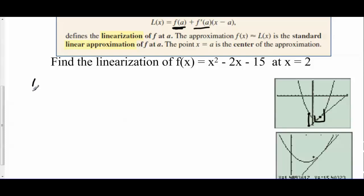Well, this is the equation of a line so we need a point. The x is 2 and we need the y. So if we take 2 squared is 4 minus 4 is 0, and then we have minus 15. So we have the point (2, -15). Now we need the slope and the derivative is 2x - 2, and we're going to evaluate that at x equals 2, which is 4 - 2, which is 2. So the slope is 2.